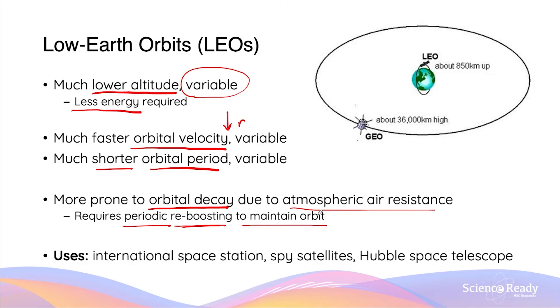Some common uses of LEO orbits include the International Space Station, several types of spy satellites, and the Hubble Space Telescope.